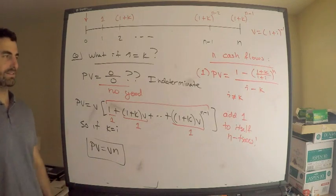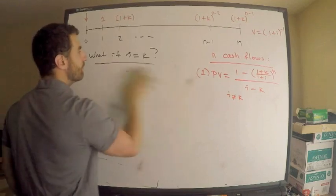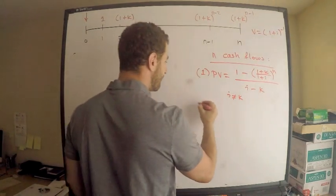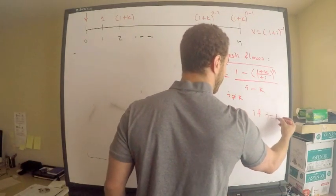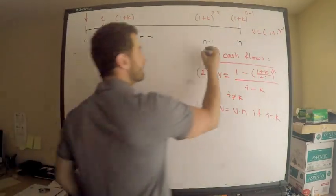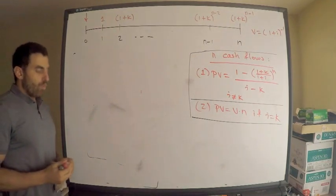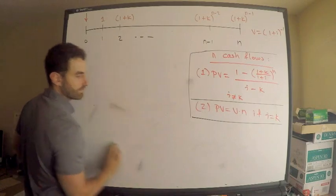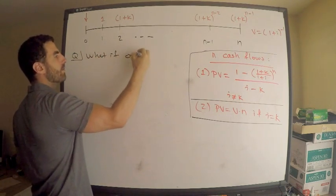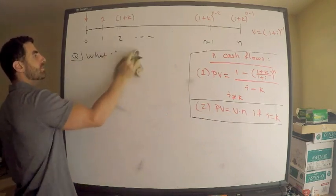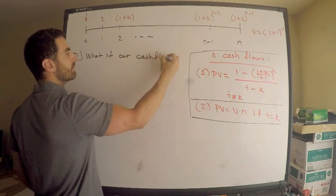How nice is that — it's wonderful! So Case 2: the present value equals v·n when i equals k. That takes care of all the finite cases. Now I want to continue with infinity, because who doesn't like to play with infinity? So, what if our cash flows continue to infinity?